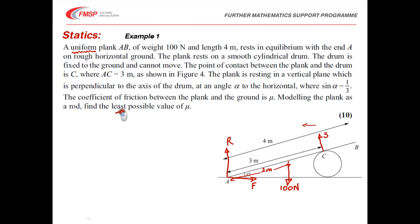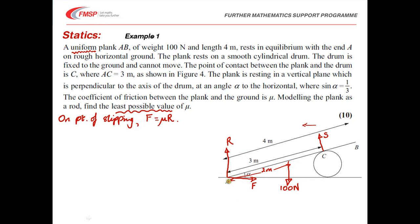We're looking for the least possible value of μ — 'minimum' is a keyword here — meaning the system is on the point of slipping, so friction is limiting and F = μR. To find μ, we need F and R, but both require knowing S first. The easiest approach is to avoid R and F altogether by taking moments about A, since both R and F act through A and so have no moment about that point.